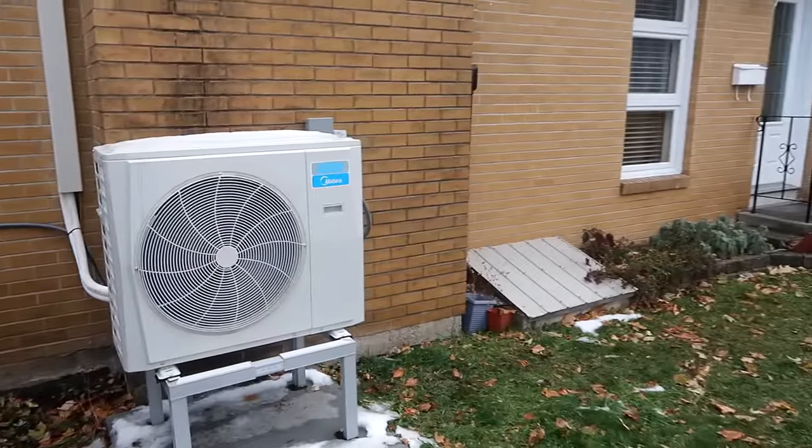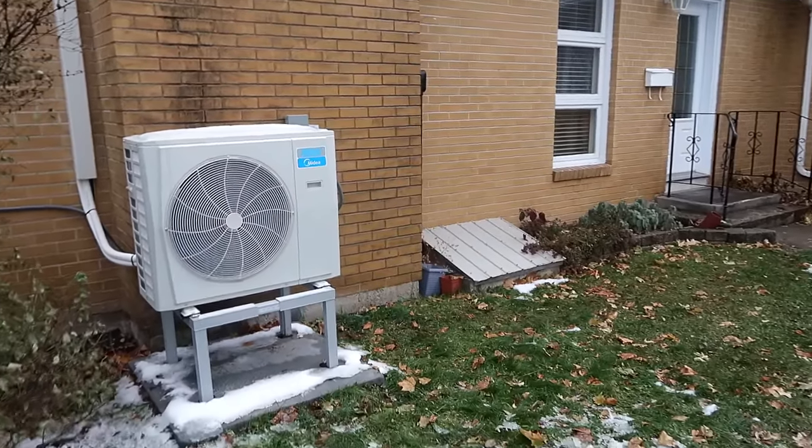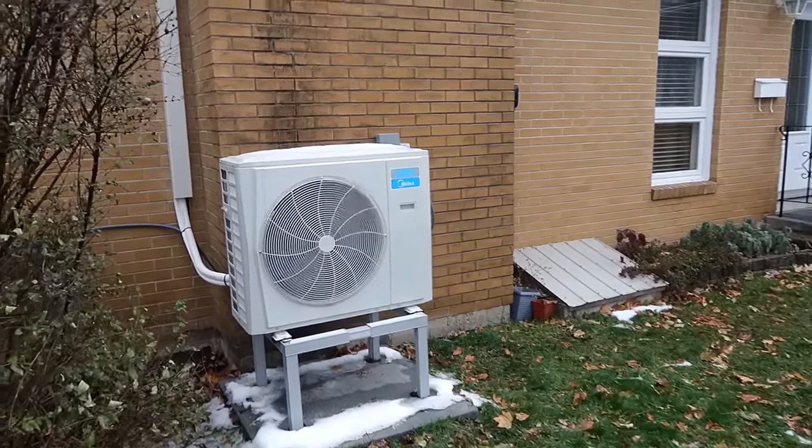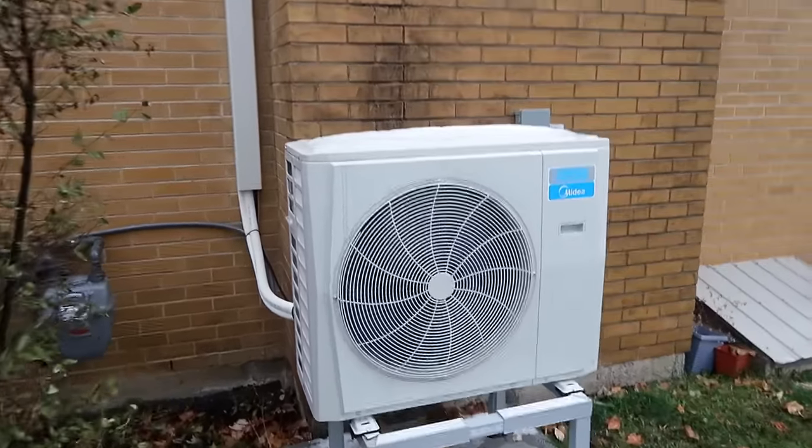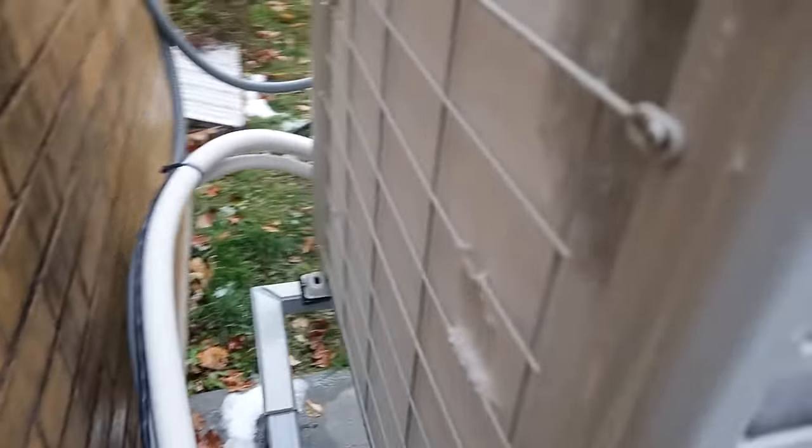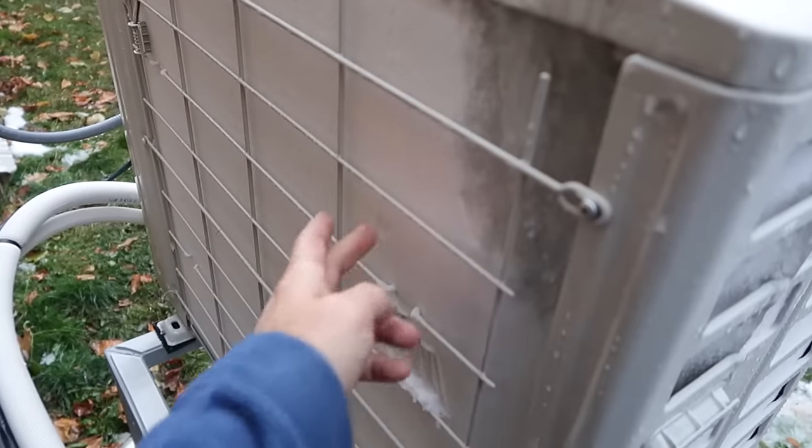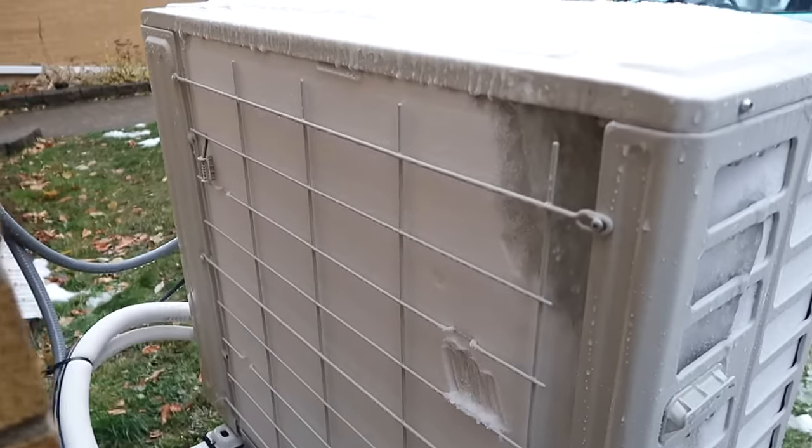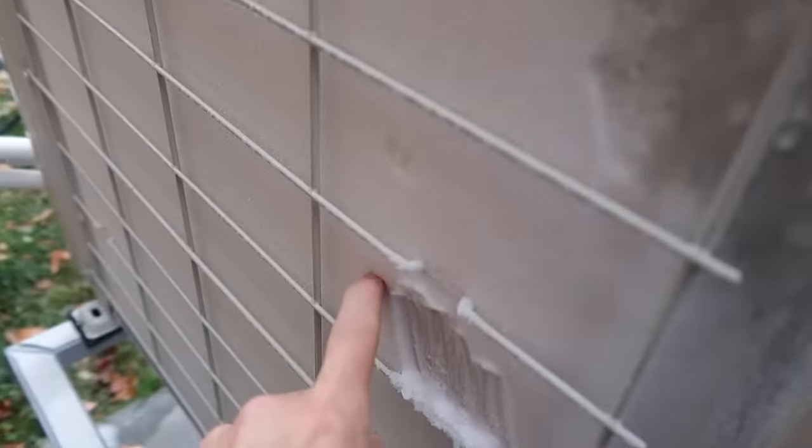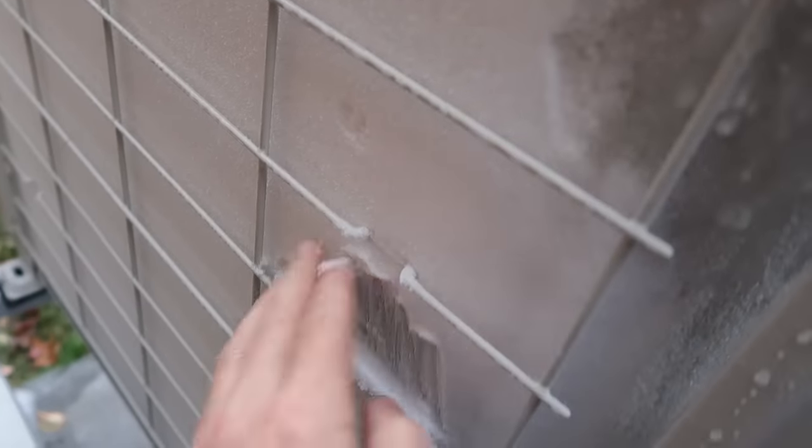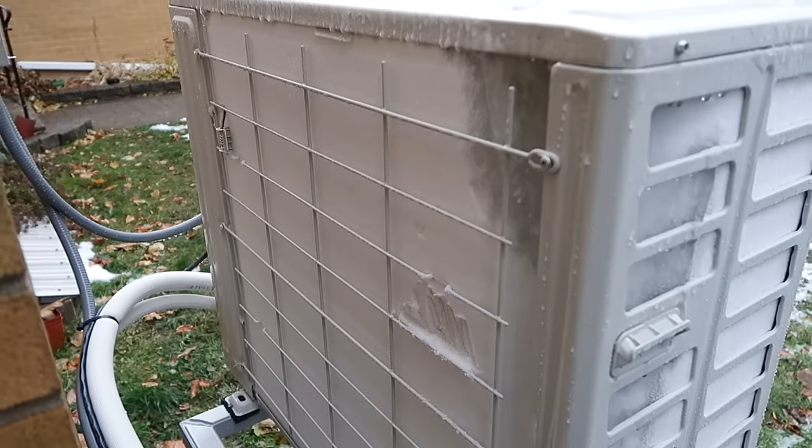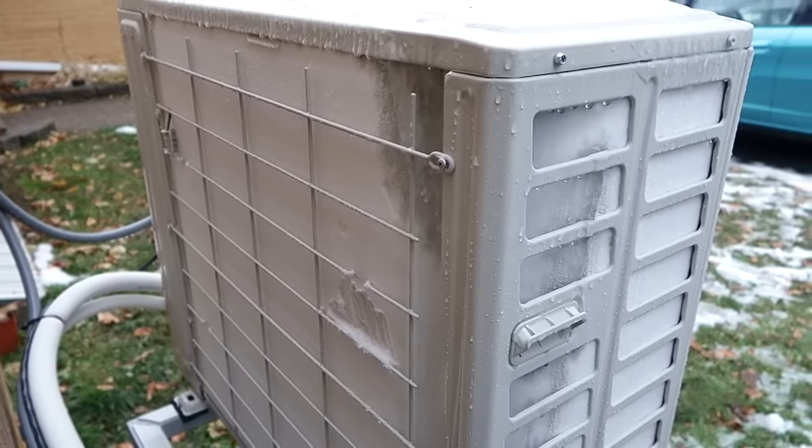Now the mini splits were working really well all through the fall, but then when things got around freezing, this happened. The temperature is well above zero right now, three degrees Celsius, but this thing is all iced up and it wouldn't be iced up if there's air flowing through here, this part wouldn't get cold enough to actually freeze on there, but because there's no air going through because it's completely iced up, it basically gets cold because it's not getting any air through it.